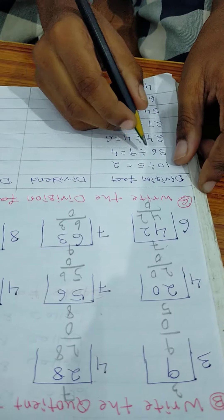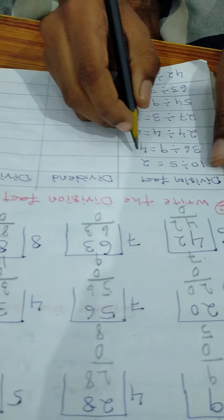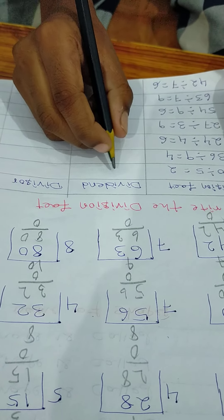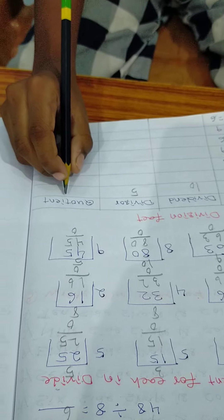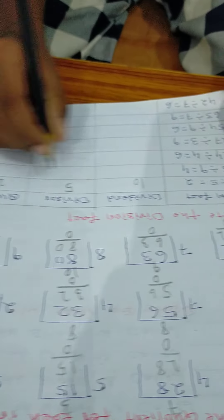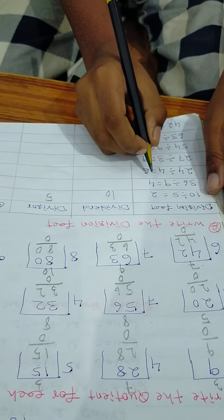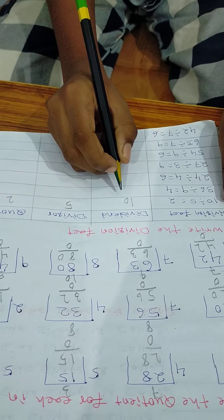Write the division fact. Division fact divided, division, quotient. 10 divided 5 is equal to 2. Dividend is 10. Divisor is 5. Quotient is 2.